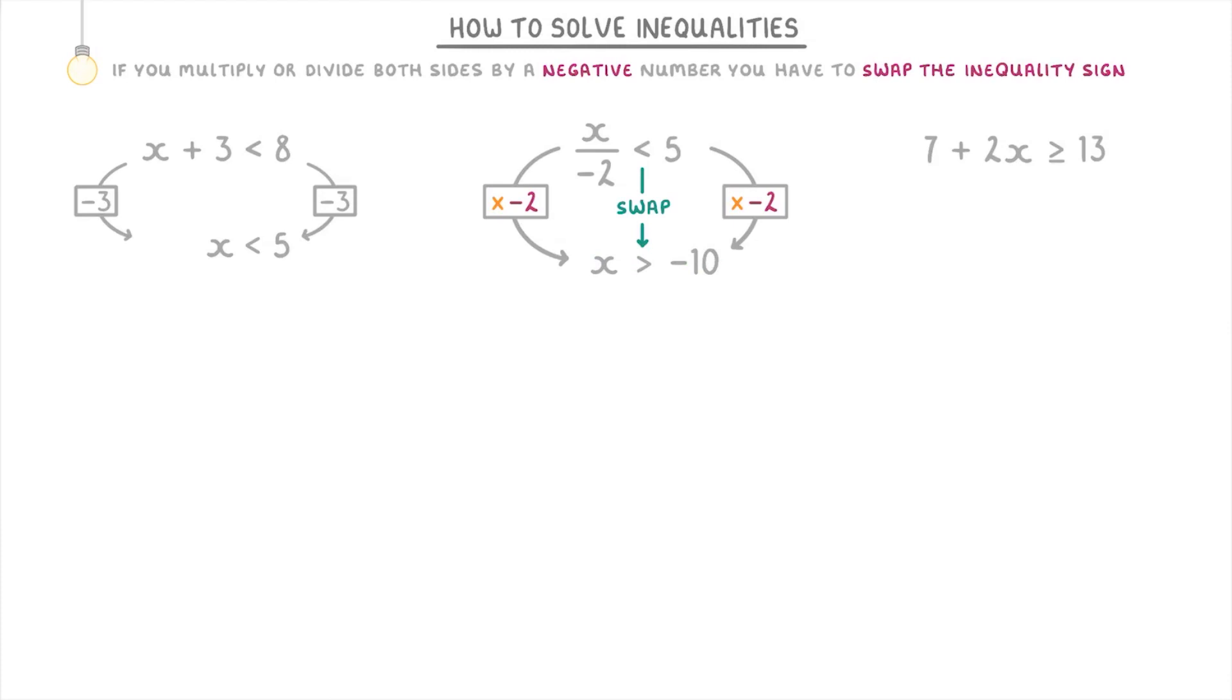The last question here, 7 + 2x is more than or equal to 13, is a bit trickier because it involves two steps. The first thing we're going to have to do is take away 7 from both sides to get 2x is more than or equal to 6, and then we're going to have to divide both sides by 2 to get x is more than or equal to 3.